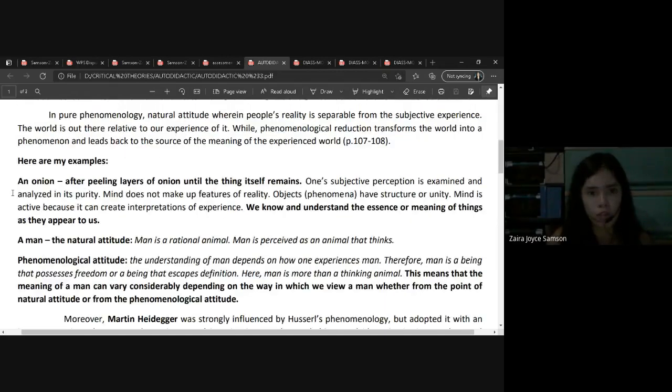Here's another example: an onion. You'll know it's an onion because you've known since elementary. When you smell it, you already know the features of onion - purple color, it hurts your eyes when cut. But after you peel the layers of the onion until the thing itself remains, that's when you discover what's truly the value of an onion.